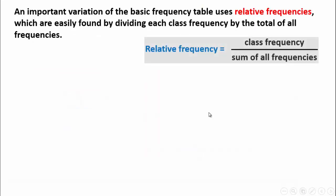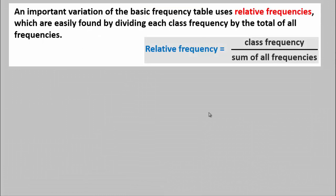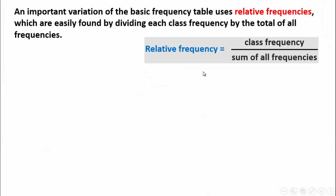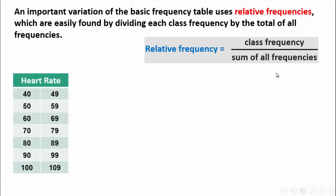An important variation of the basic frequency table uses relative frequency, which are easily found by dividing each class frequency by the total of all frequencies. Relative frequency is equal to the class frequency divided by the sum of all frequencies.